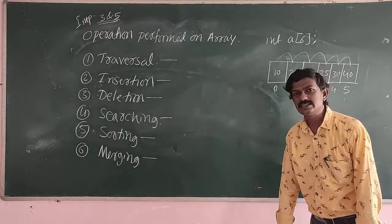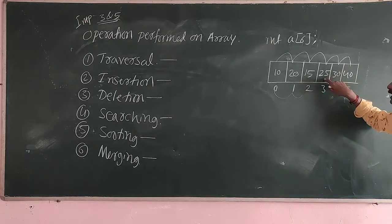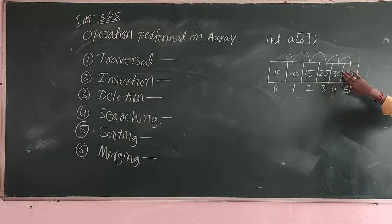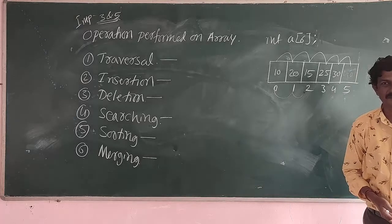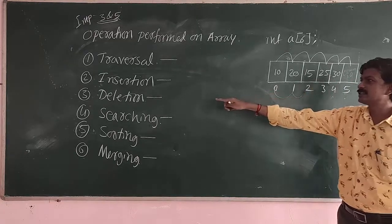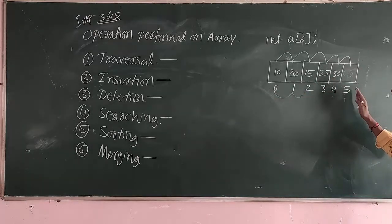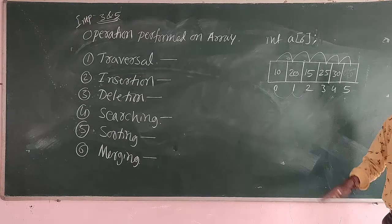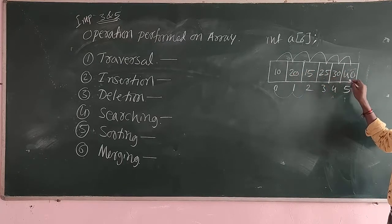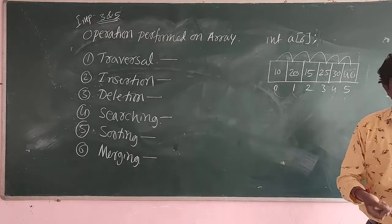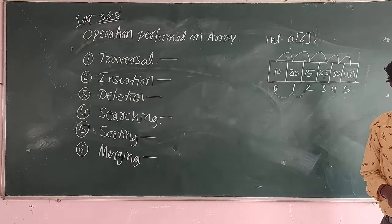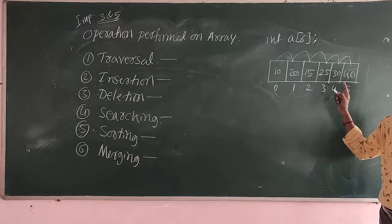The next one is deletion operation. Deletion is an operation which removes an existing element from the given data structure. If I have 5 elements and I remove any one of those existing elements, it is called a deletion operation. The element must be existing — it is not possible to delete an element which does not exist in the array. Deletion is only possible when the element exists in the given data structure.